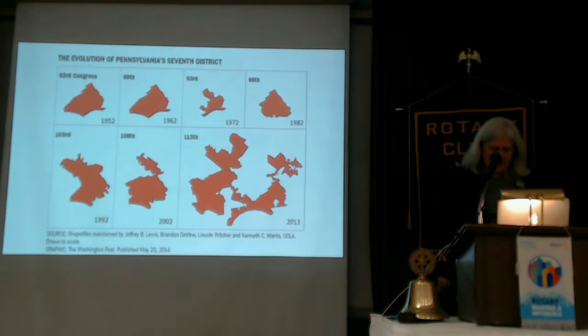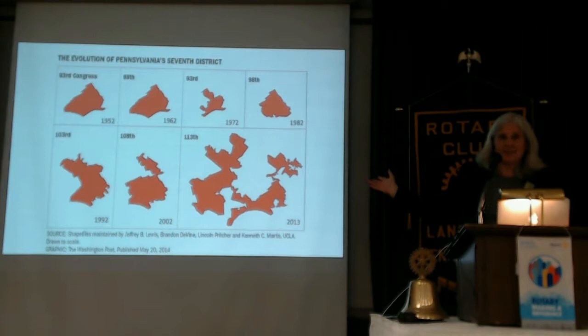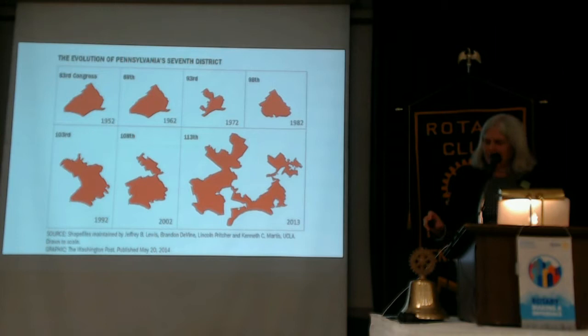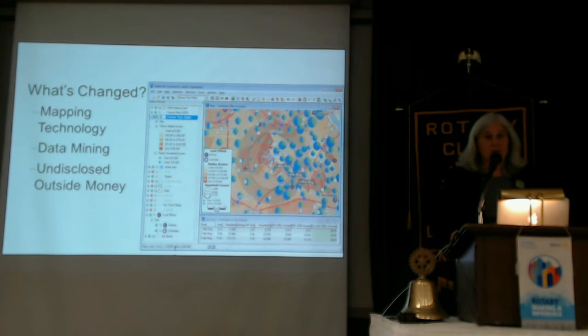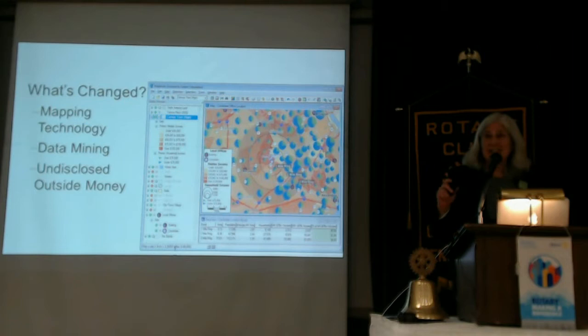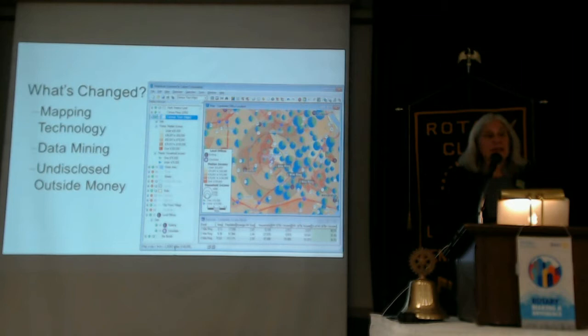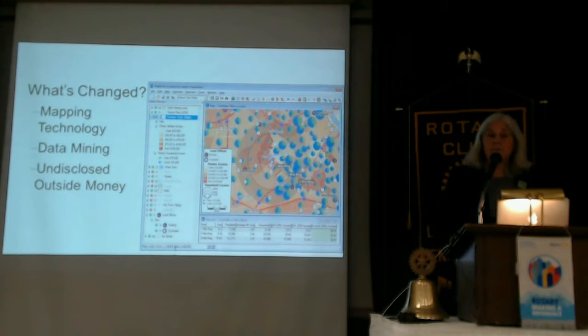Gerrymandering has been around since 1812 with Elbridge Gerry, but it's changed. Look at the evolution of District 7 — something's happened to our wonderful practice of gerrymandering. What's happened is mapping technology. Think what you can do with maps that you couldn't do a decade or 20 years ago. And data mining technology — think about the information about you that's available: when and how often you vote, party registration, education level, income level, what you watch on TV. All of that data is now used. When legislators sit down and start carving up neighborhoods, they can predict block by block how a voting block will vote — and carve it up very precisely to control and predict the outcome of our elections.